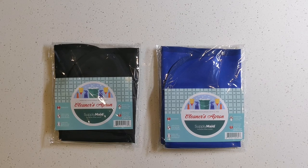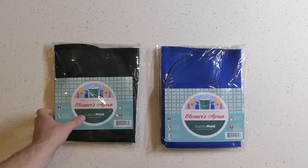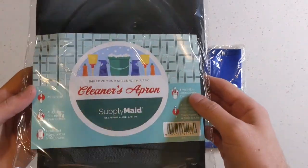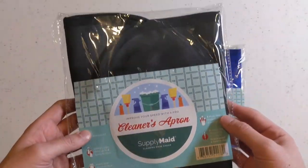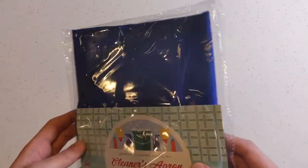The Supply Made Professional Cleaner's apron comes in two colors: midnight black and royal blue. Here's the black apron and how it arrives, how it's packaged, and here's the blue when it arrives and how it's packaged.